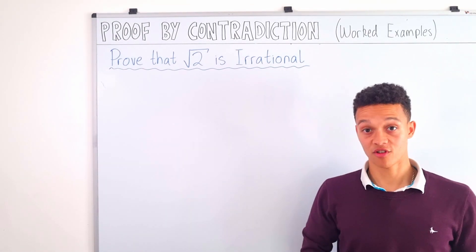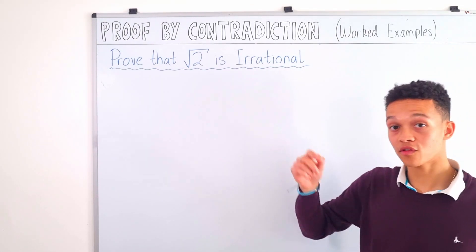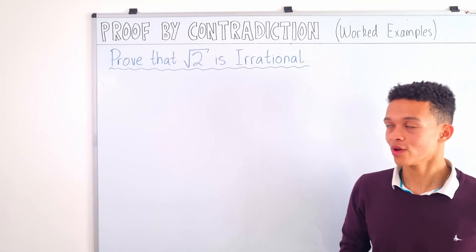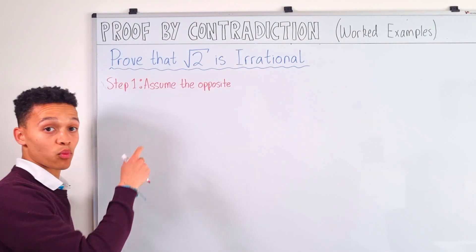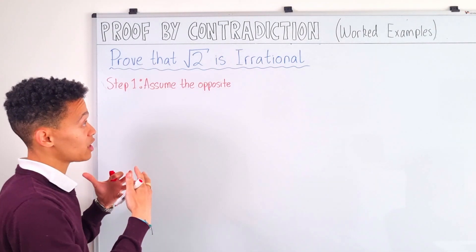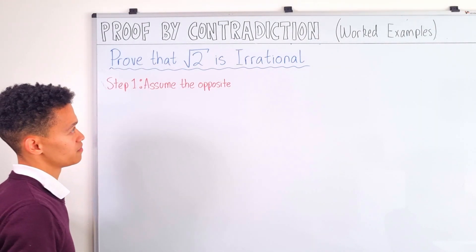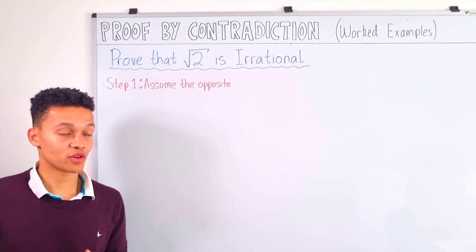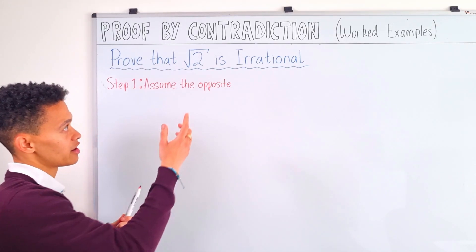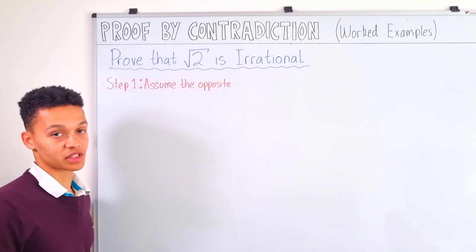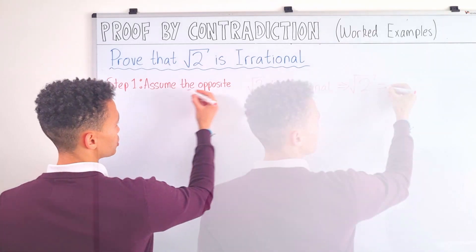This is a very common proof by contradiction question: prove that root 2 is irrational. In step one, we assume the opposite to our statement is true. Root 2 can only either be rational or irrational, so the opposite to our statement would be that root 2 is rational.